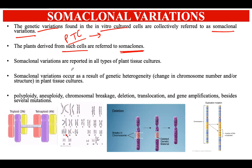Somaclonal variations have been reported in almost all types of plant tissue cultures done so far. There are several reasons why these somaclonal variations occur. The primary reason is genetic heterogeneity, meaning there is a change in the number or structure of chromosomes in plant tissue culture. This leads to somaclonal variation because something is happening within the genetic material, resulting in a different type of trait — maybe resistance to a specific disease, bacteria, virus, or pesticide resistance.